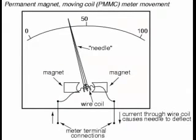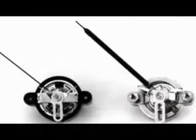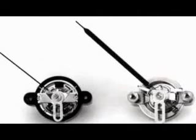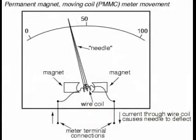Practical electromagnetic meter movements can be made now where a pivoting wire coil is suspended in a strong magnetic field, shielded from the majority of outside influences. Such an instrument design is generally known as a permanent magnet moving coil, or PMMC movement.